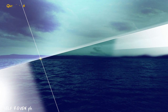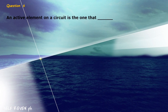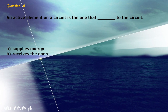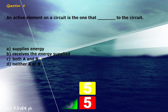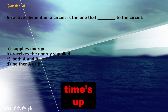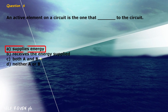Question 6: An active element in a circuit is the one that blank to the circuit. A) supplies energy, B) receives the energy supplied, C) both A and B, D) either A or B. The correct answer is letter A, supplies energy.